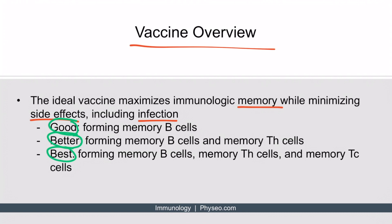A good vaccine would form memory B cells. A better vaccine forms memory B cells and memory T helper cells. But the best vaccine would form memory B cells, memory T helper cells, and memory cytotoxic T cells.